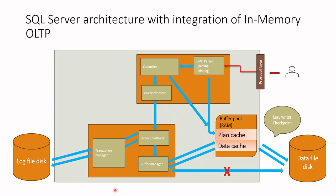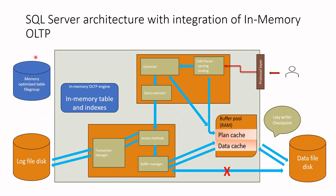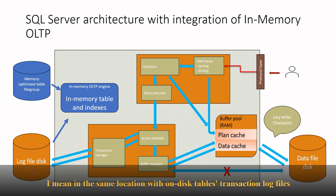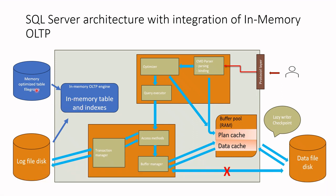What did they do? Firstly, they added the in-memory OLTP engine, where non-durable in-memory tables and indexes are located. The data files of these tables are placed in a memory-optimized table file group on disk — we call it a file group. Transaction log files are saved in the same location as on-disk tables. On-disk tables are our usual tables. When SQL Server is restarted, these tables are recovered by bringing the data from the file group, data files, and log files accordingly.